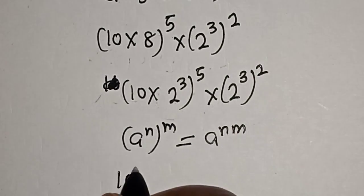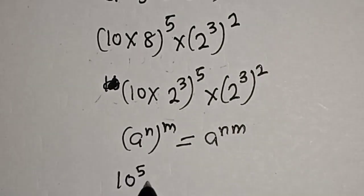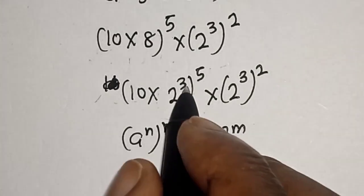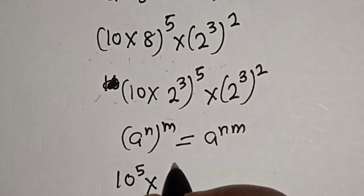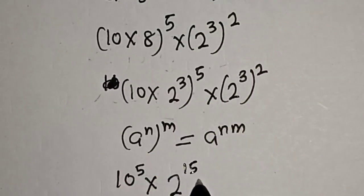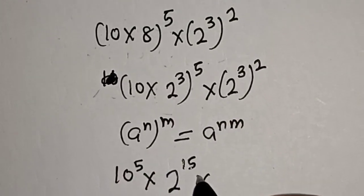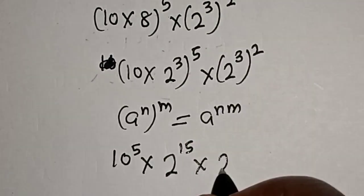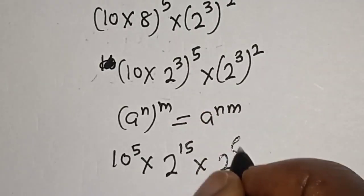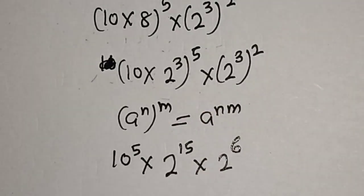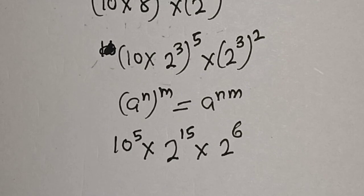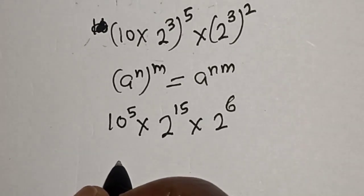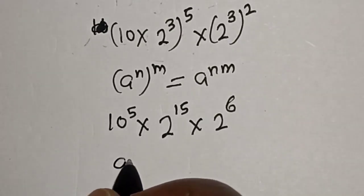10 raised to power 5 multiplied by 2 raised to power 3 times 5, that is 15, multiplied by 2 raised to power 3 times 2, that is 6.